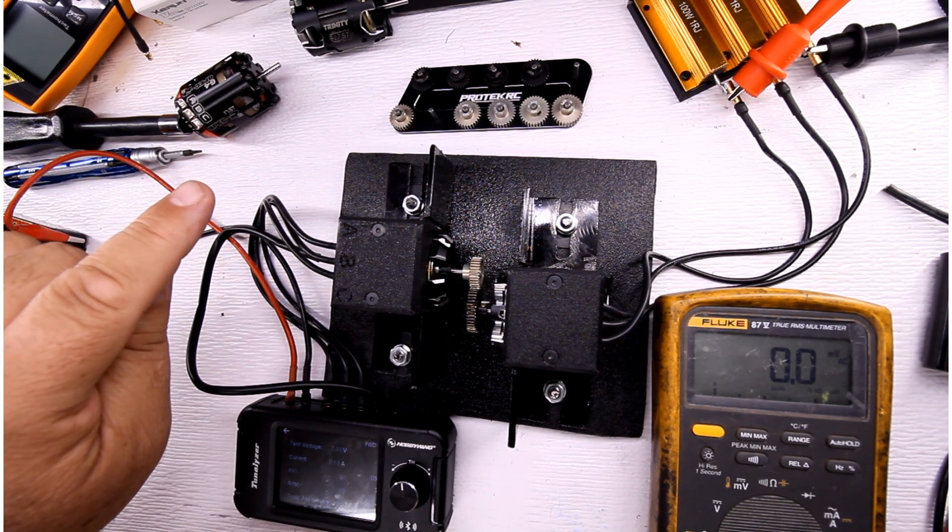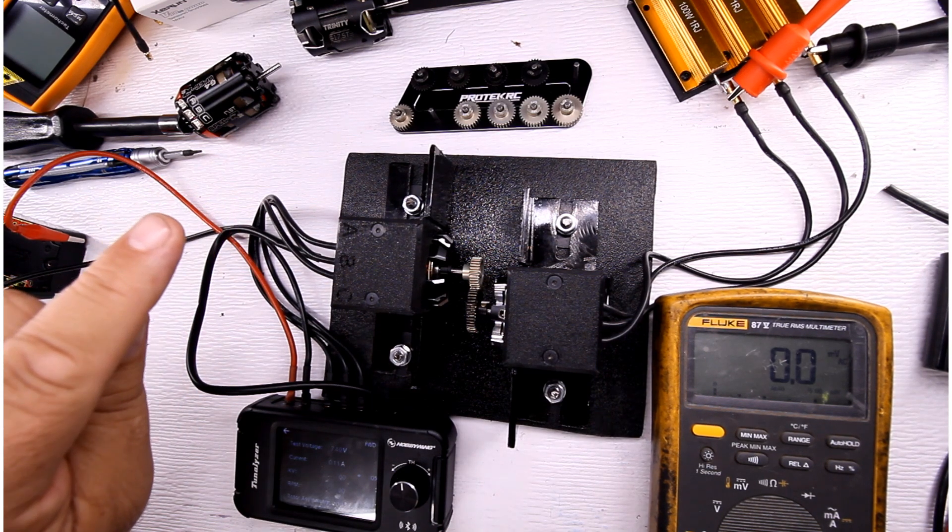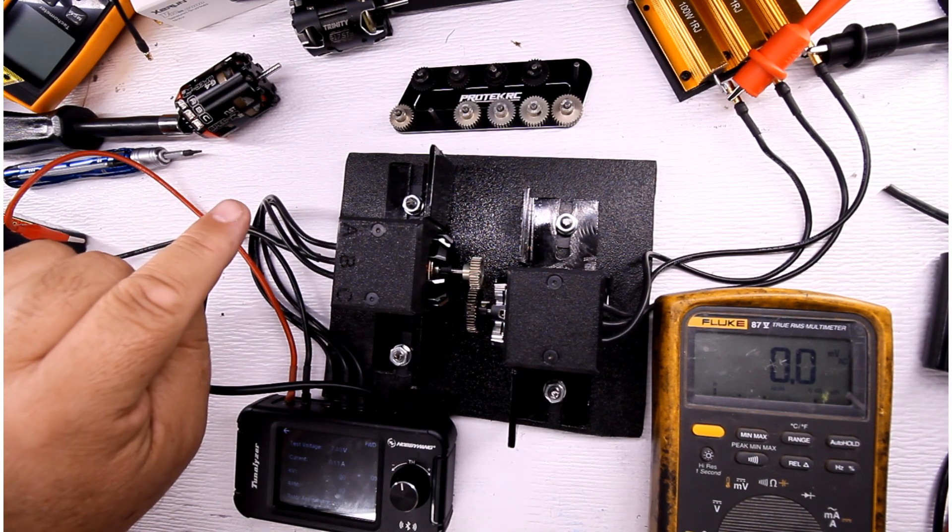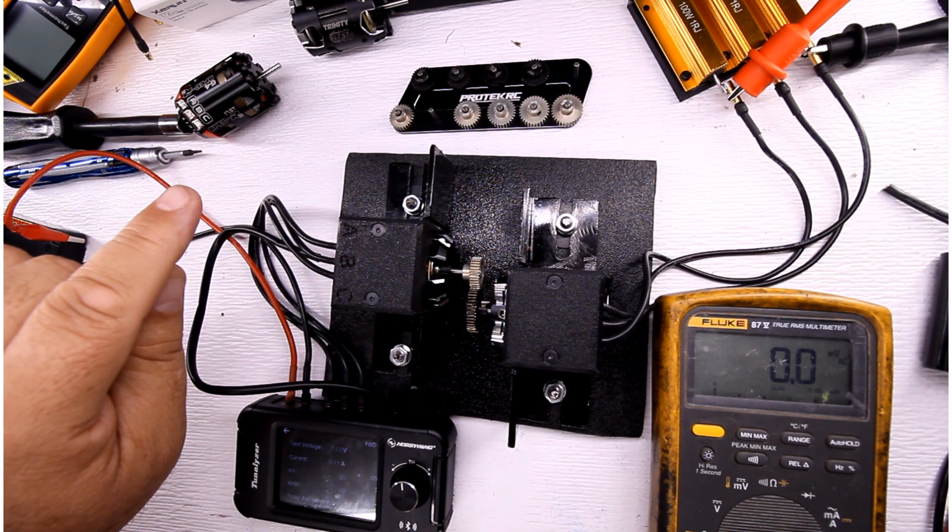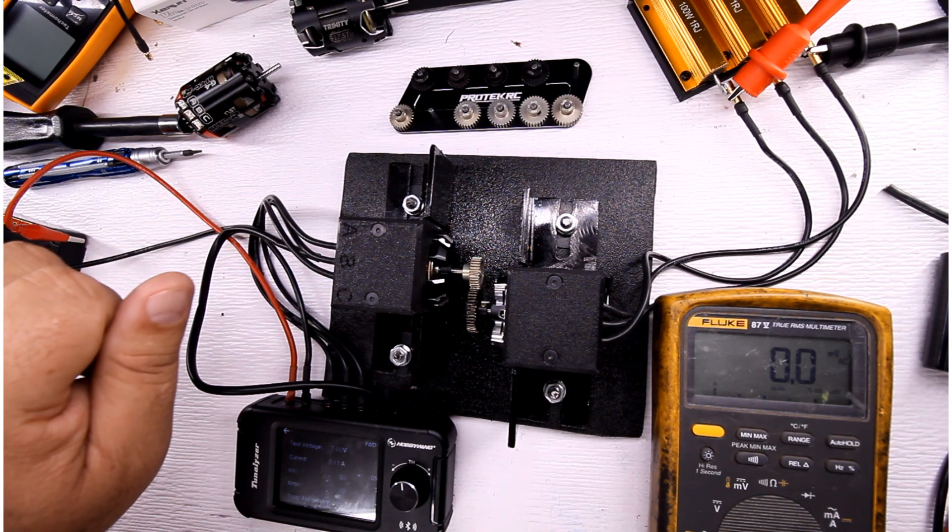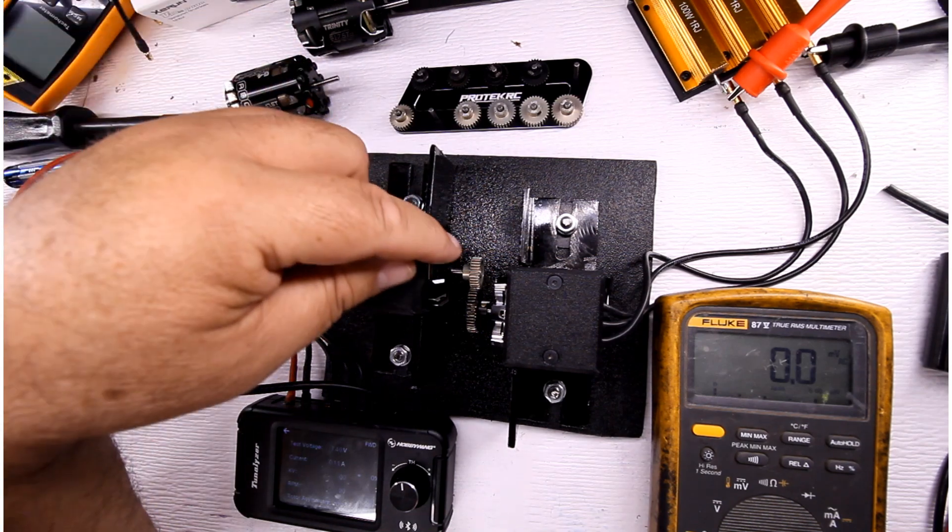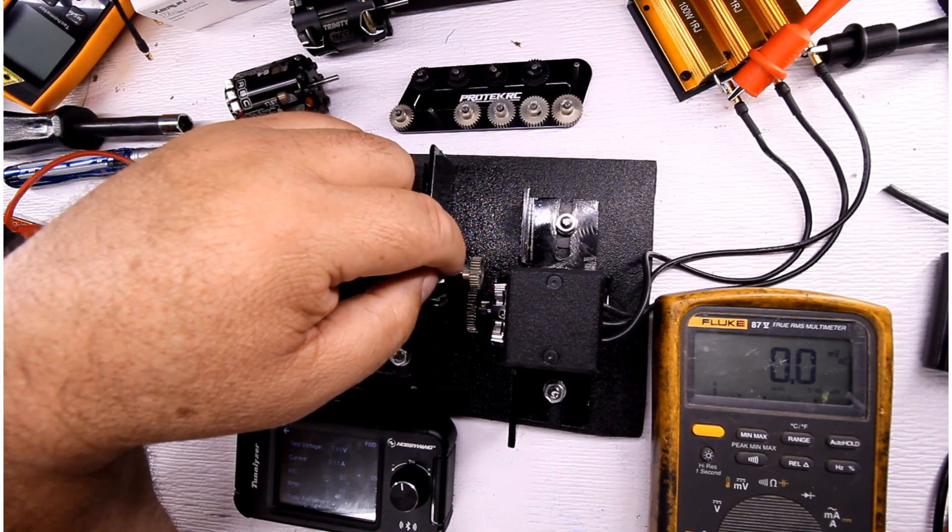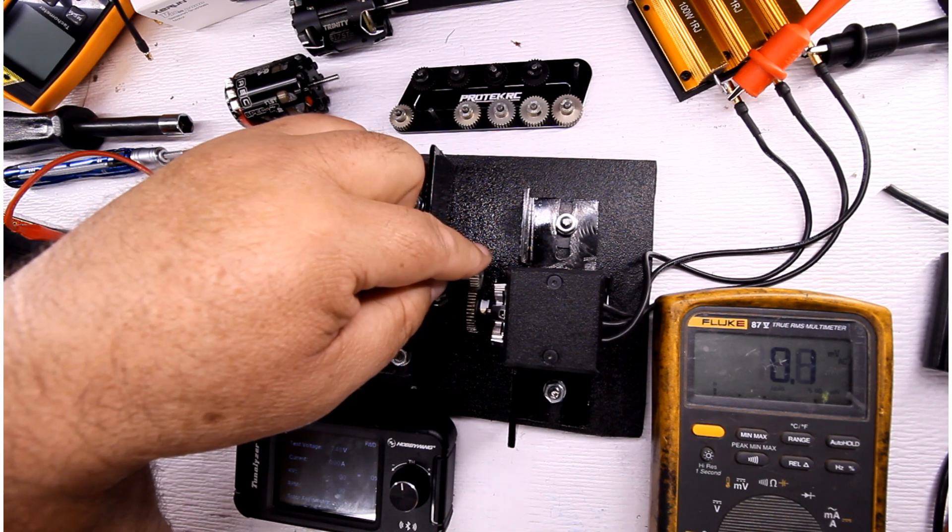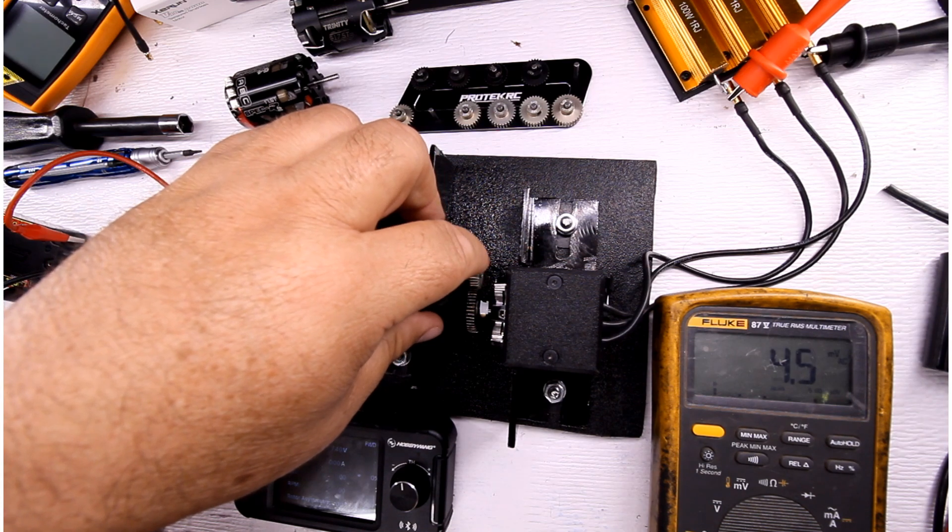The Tekin, however, the RPMs on that one, without a load, is 21,600 RPMs. The G4R, without a load, is 25,000 RPMs. That's unloaded. So I'm going to start this one off with a lower gear for the pinion, because it's obviously going to be spinning faster, and we'll see what we get.